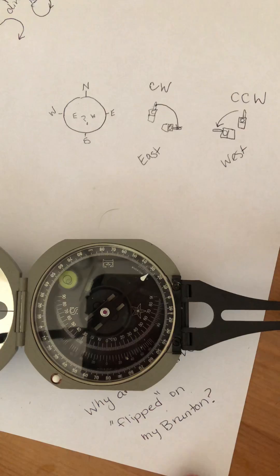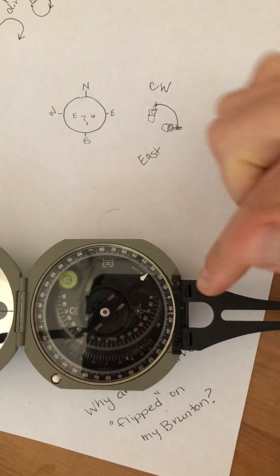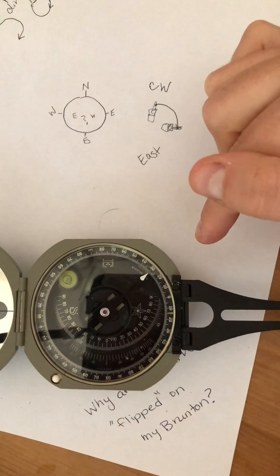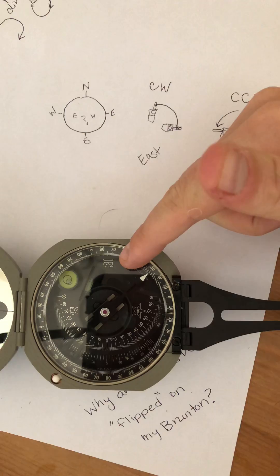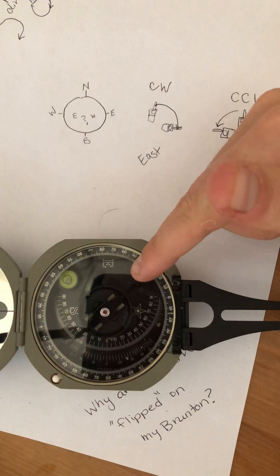If I rotate the compass clockwise and the needle is still pointing to the north, then for my compass to correctly read off the direction that I'm pointed in, east has to lie to the left of north on the Brunton.